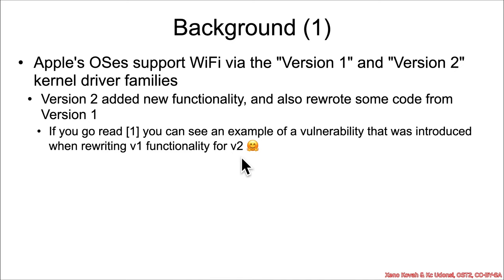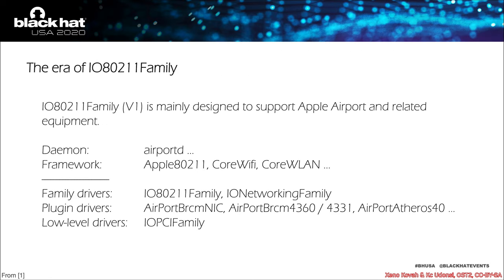There was a vulnerability found in 2007 — Apple closed it — and then they reintroduced it when they rewrote version 1 for version 2. That again just goes to the fact that if people don't know to program paranoid, then whenever they're rewriting code, they will be reintroducing vulnerabilities.